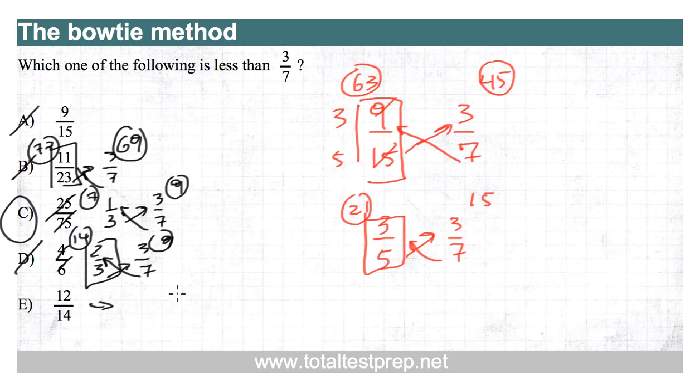And 12 fourteenths reduces to, divide by two, six-sevenths versus three-sevenths. Here, we actually don't need to use the bowtie method because we have the same denominator. Six-sevenths is more than three-sevenths. And so our answer is C, using this bowtie method.